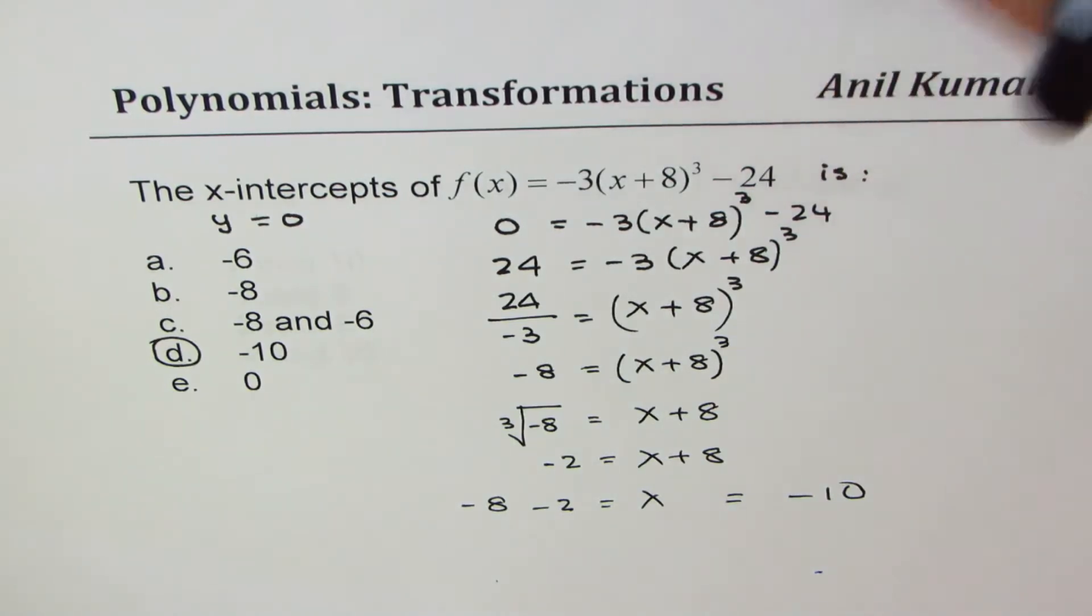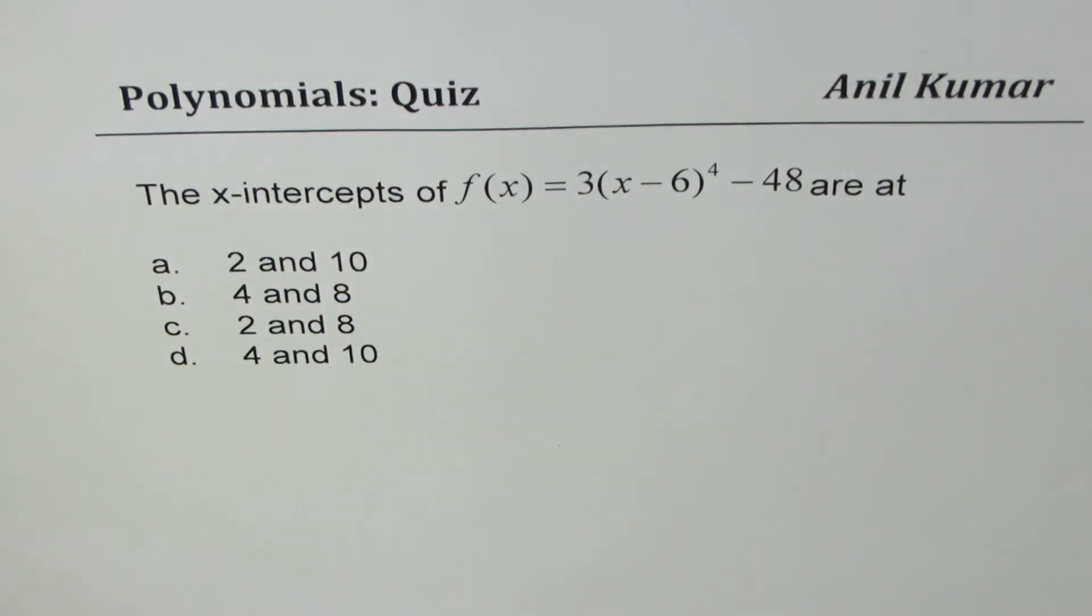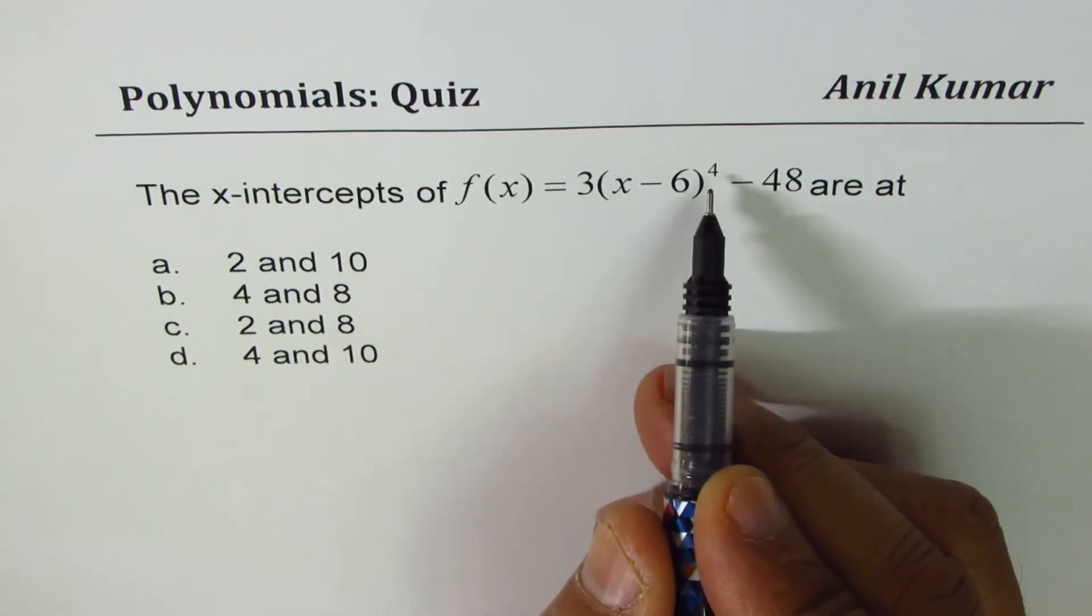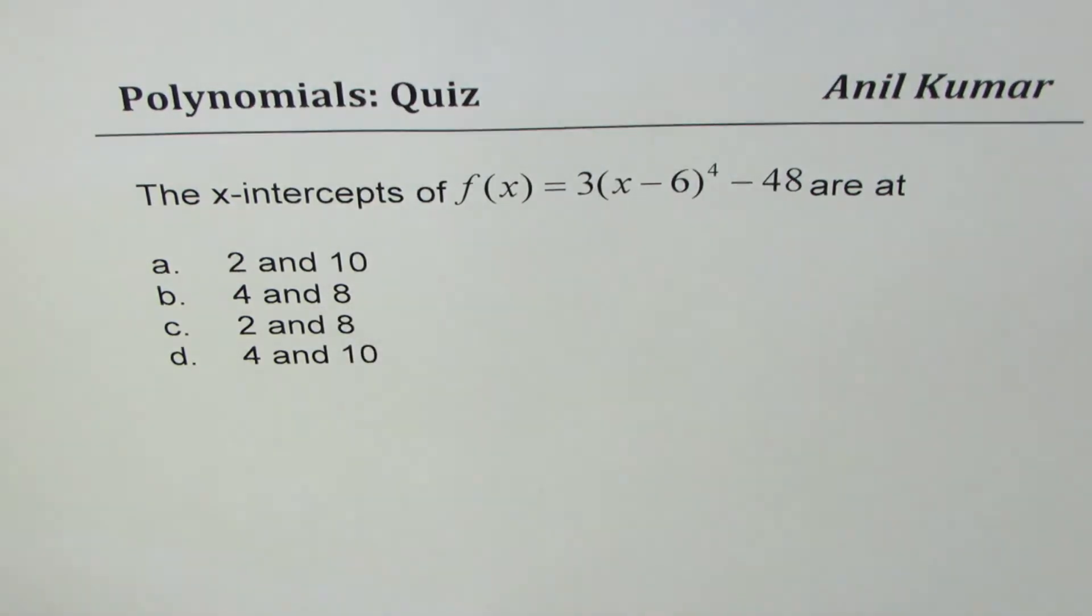Go through this solution and then here is the test question for you on finding x-intercepts. The question for you is: the x-intercepts of f(x) equal to 3(x - 6)⁴ minus 48 are at. So there are choices given to you. You can pause the video, select the right choice,